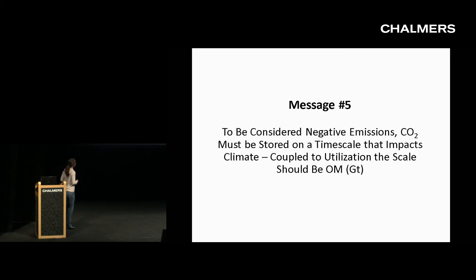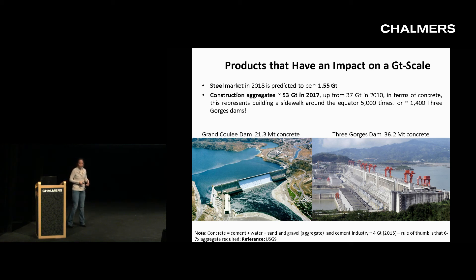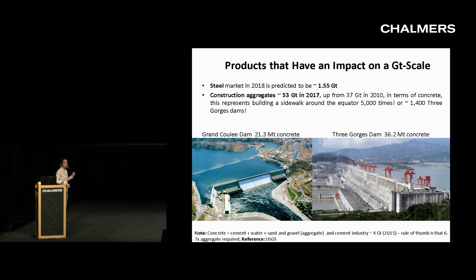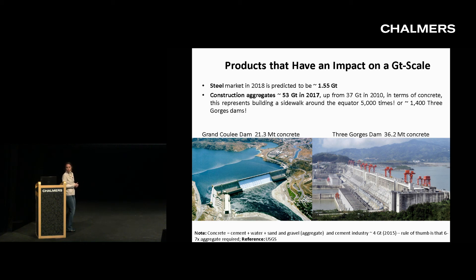The final message: to be considered negative emissions, CO2 has to be stored on a timescale that impacts climate. If utilization is to be coupled with direct air capture, it has to be on the order of gigatons and stored on a timescale that impacts climate. If you think about converting CO2 from the air into a product — which is what all direct air capture companies are doing today because there are no other incentives — whether it's fuel or synthetic aggregates: the steel market, converting CO2 to carbon fiber and replacing all steel, only adds up to about 1.5 gigatons. But sand, gravel, and construction aggregates are about 50 gigatons in 2017, so making CO2 into a carbonate material for that market is actually quite significant.